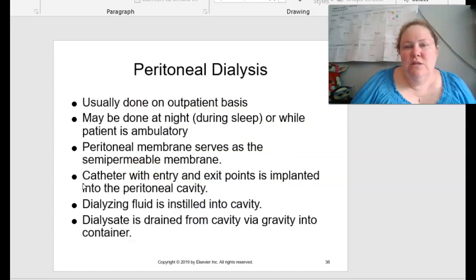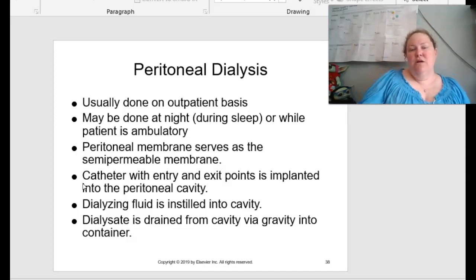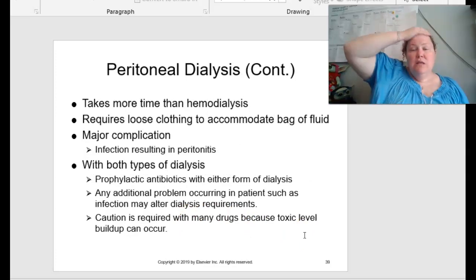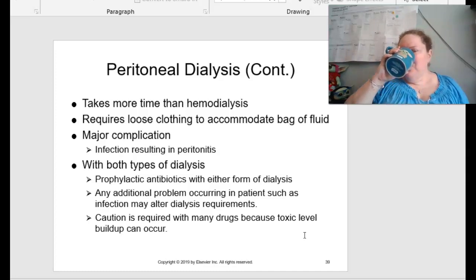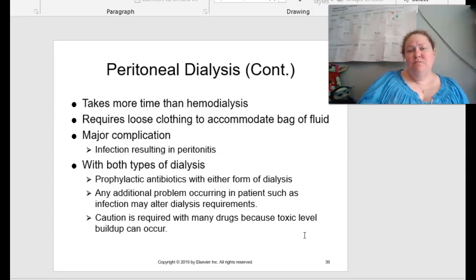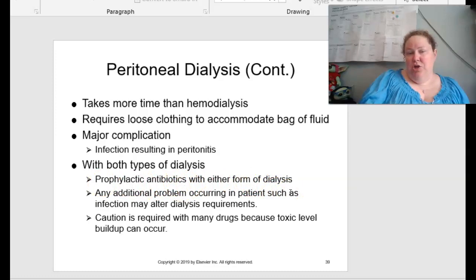Peritoneal dialysis is usually done on an outpatient basis and may be done at night while sleeping or while the patient is ambulatory. The peritoneal membrane serves as the semi-permeable membrane. A catheter with an entry and exit point is implanted into the peritoneal cavity. The dialyzing fluid is instilled into the cavity, and the dialysate is drained via gravity into a container. This takes more time than hemodialysis and requires loose clothing to accommodate the bag of fluid. A major complication is that infections can result in the peritoneal cavity. Prophylactic antibiotics are used with either form of dialysis, and caution is required with many drugs because toxic level buildup can occur.